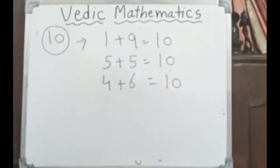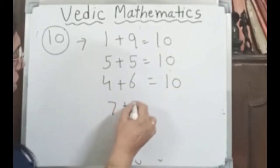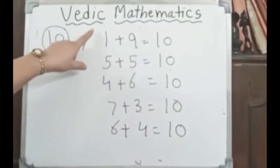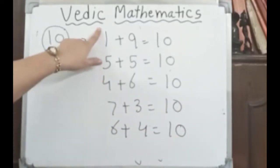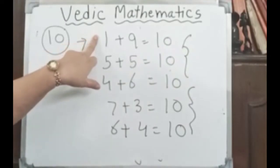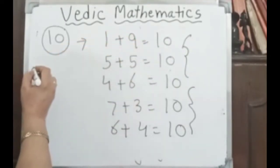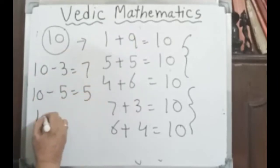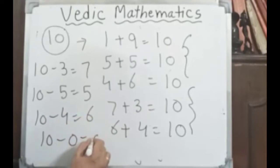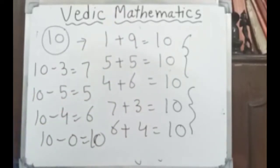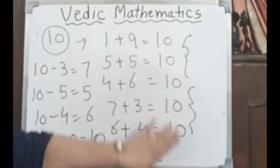You all know how to add and subtract numbers. Seven plus three is ten, six plus four is ten. We have to learn the combination of ten. Ten minus three is seven, ten minus five is five, ten minus four is six, ten minus zero is ten. Keep this calculation in your mind. Vedic Mathematics means fast calculation without a single mistake. You have to keep these combinations in mind.